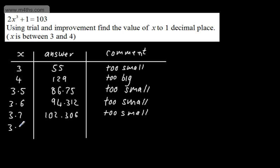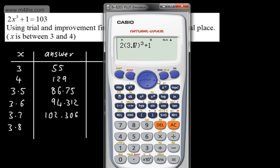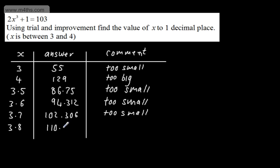So if I now do 3.8, we'll see that this one is going to be too big. So 3.8, if we substitute this in, that's going to give me now, what have we got? 110.744. So 110.744. Now this is going to be too big.